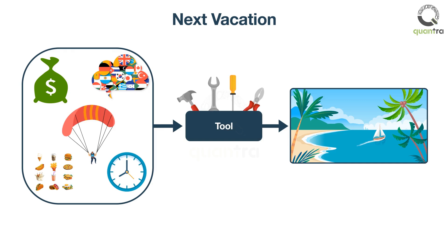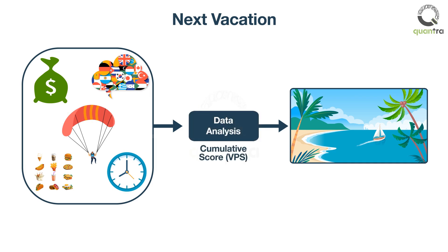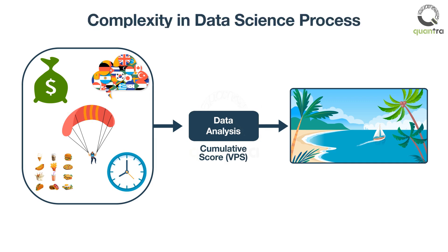A simplistic one would have all these data points for say a thousand locations across the globe. Based on your inputs, it will come up with a cumulative score, which we will call vacation preference score or VPS for short. It will recommend you locations that are close to your VPS. Sounds simple enough.